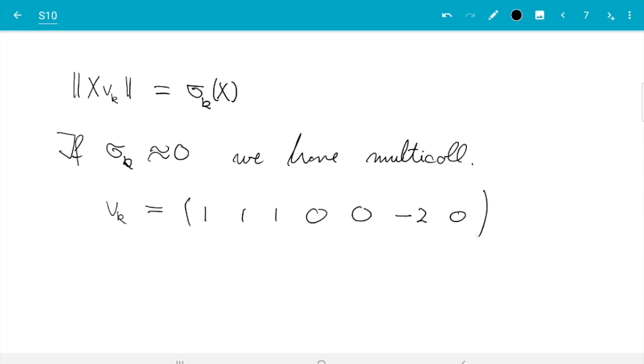Similarly, if that comes out as, I don't know, one, one, one, zero, zero, minus two, zero, then we would just need to count. Presumably if there's an intercept we should probably start numbering the columns at zero, so zero, one, two, three, four, five, six. But if it came out like this we would know the intercept, x1, x2, and x5 are linearly dependent in the way that one plus x1 plus x2 minus two x5 is approximately equal to zero.